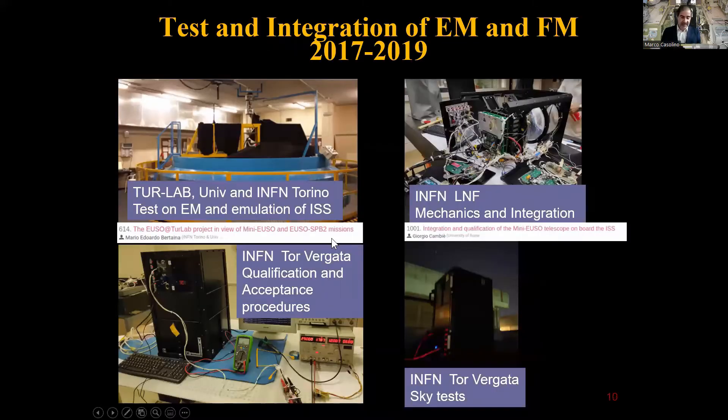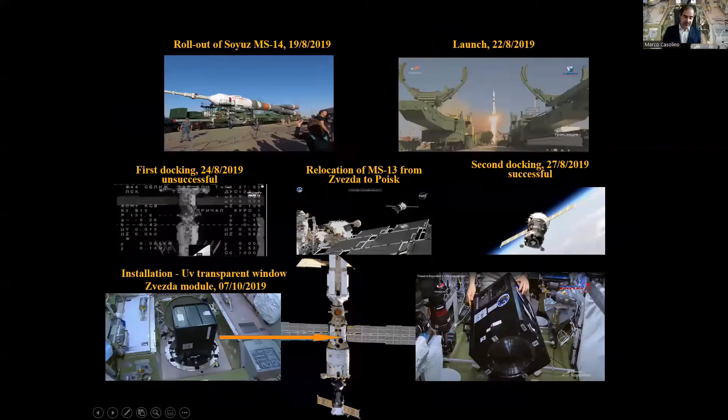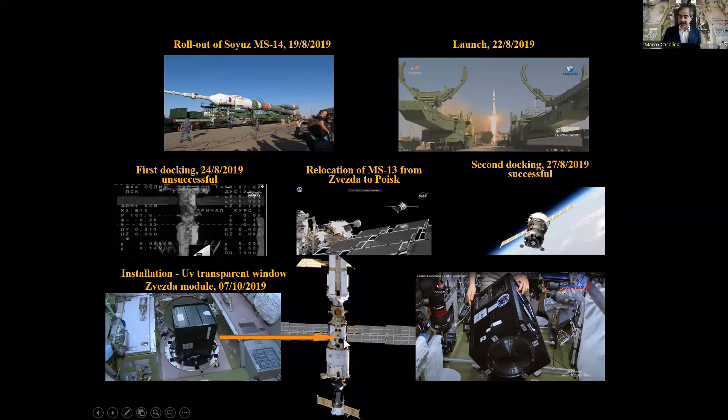The detector was tested and integrated. There was a ground model and an engineering model. All was accepted by Russian Space Agency and underwent a number of tests. It was integrated in international laboratories of Frascati, was also calibrated in the underground laboratory in Torino. All the acceptance tests with Roscosmos took place in Tor Vergata where we had several sky tests. Finally, we sent it to Baikonur for the launch with an uncrewed Soyuz spacecraft. The docking was a success. It was installed in October 2019 in the UV-transparent window of the Zvezda module.